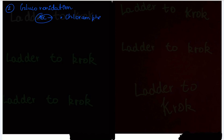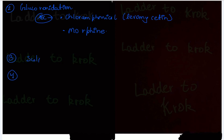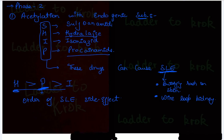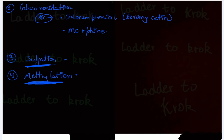For glucuronidation, examples include Chloramphenicol (Levomycetin) and Morphine. The third reaction is sulfation and the fourth is methylation. Most drugs undergo sulfation, methylation, and glucuronidation, so there are too many to list individually. Remember the SHIP drugs for acetylation, and that Hydralazine causes more SLE than Procainamide, and Procainamide causes more SLE than Isoniazid.